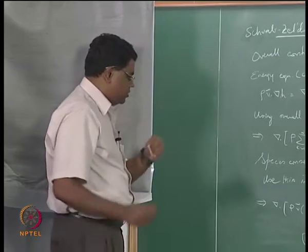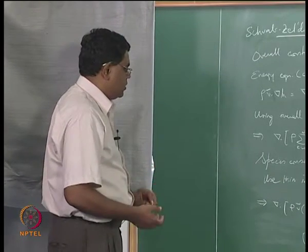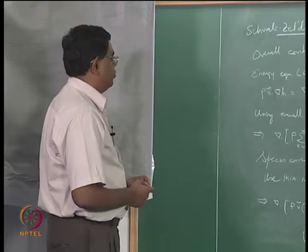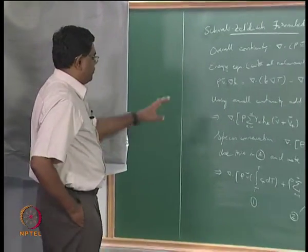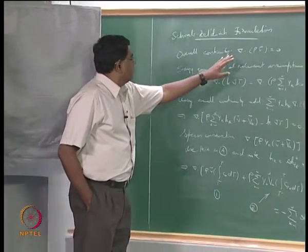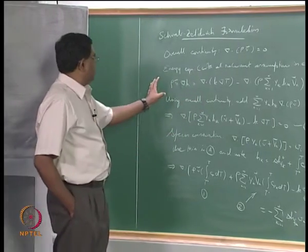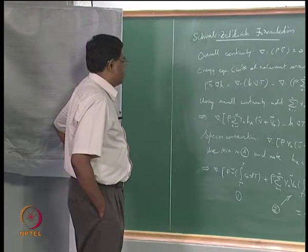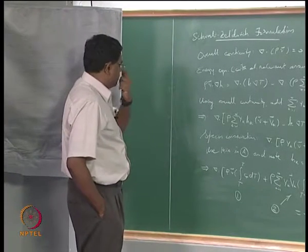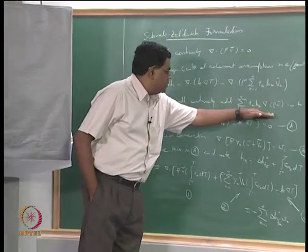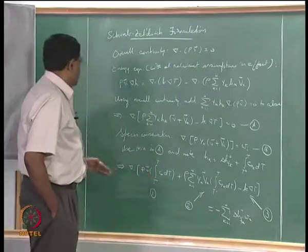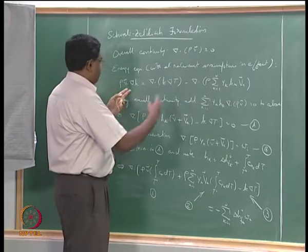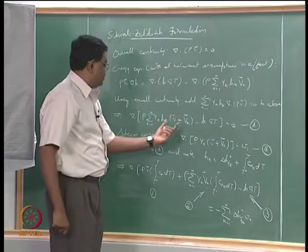We have been looking at the derivation of the Schwab-Zeldovich formulation, leading up to the formation of coupling terms of a linear operator working on both the energy and the continuity. The steps followed so far involve taking the overall continuity into account in the simplified energy equation, adding a term amounting to zero so that we can group terms together and arrive at V plus V_k.